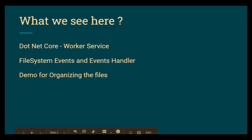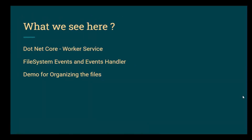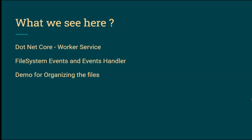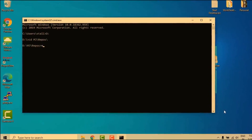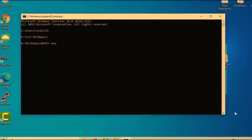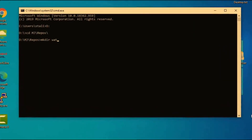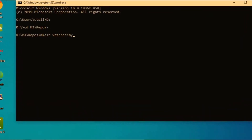Hi, in this video we will learn how to create a simple folder watcher program in .NET Core by using the worker service template. We'll also see about the file system events and event handlers, and finally we'll see a demo organizing files based on file extensions inside the folder watcher. Now let me open my console terminal to create a worker project.